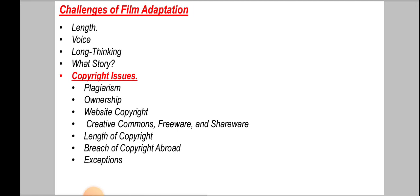Now let's discuss challenges in film adaptation. The main challenges are firstly the length, next is voice, then long thinking, then what story, and lastly the copyright issues. Regarding length: screenplays are generally up to 120 pages. One page of a screenplay roughly equals one minute of film. A 120-page screenplay thus translates into a two-hour motion picture — much longer than that and the film becomes financially unviable. If the source book is 400 pages long, how can we tell the same story in 110 to 120 pages?